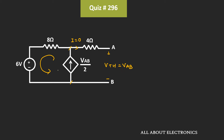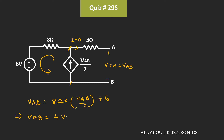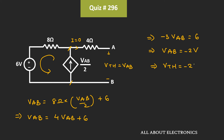In this loop, the current flowing is equal to Vab divided by 2. Applying KVL, the voltage Vab equals 8 ohm times (Vab divided by 2) plus 6V. That means Vab equals 4 times Vab plus 6, or minus 3 Vab equals 6. Therefore Vab equals minus 2V, meaning the Thevenin's equivalent voltage is equal to minus 2V.